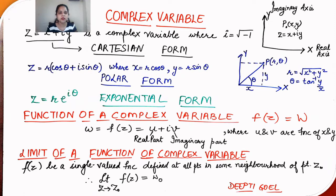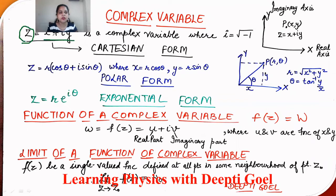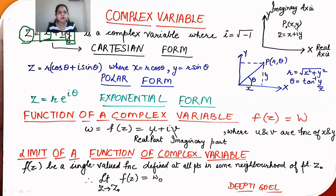In complex variables, a number consists of a real part and an imaginary part. We have a number z equal to x plus iota y. Here x is called the real part, and y, since it is associated with iota — which has a value of under root of minus one — is the imaginary part. A quantity represented as z = x + iy is called a complex variable.